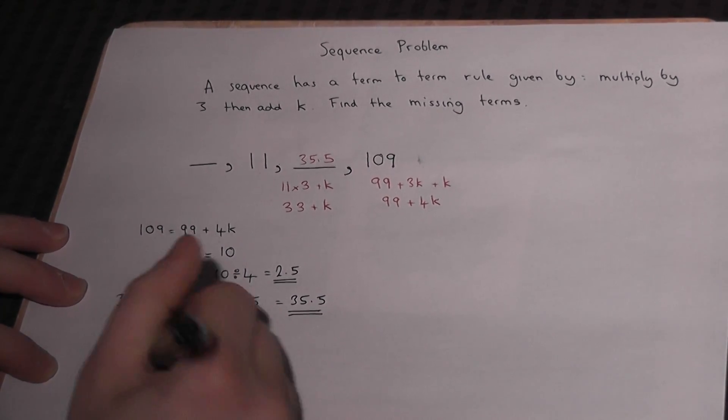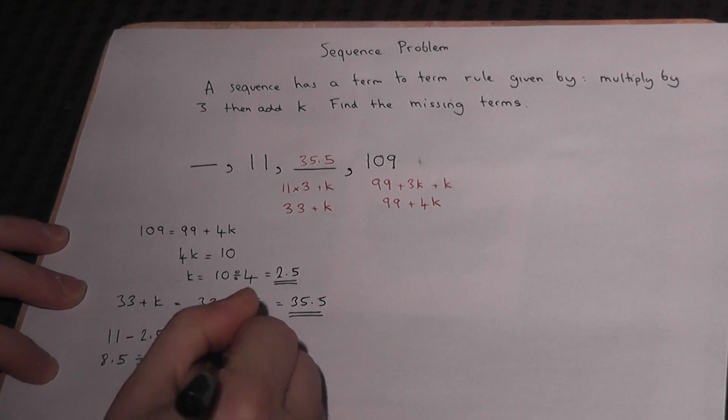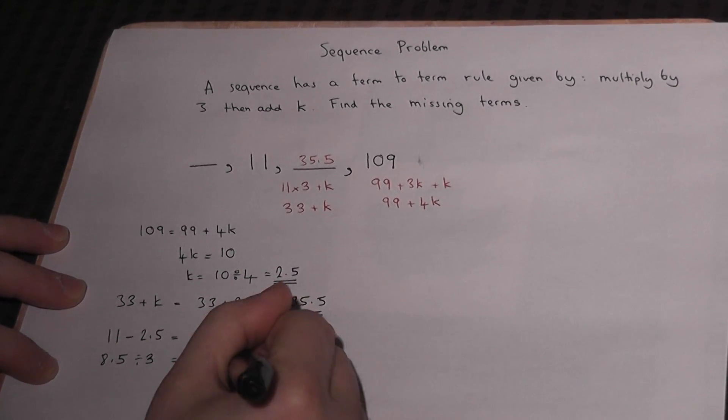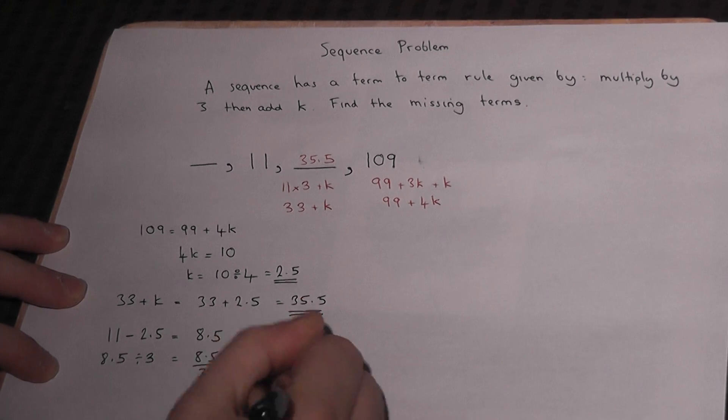Of course, we can do the calculator for that, or write as a fraction: 8.5 over 3, which is 85 over 30.